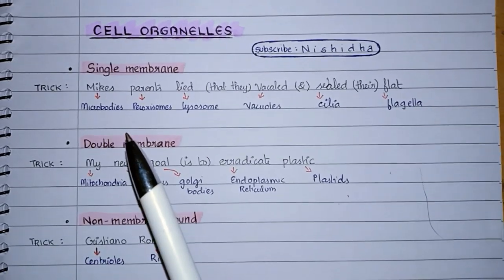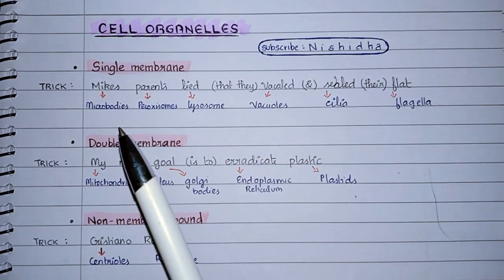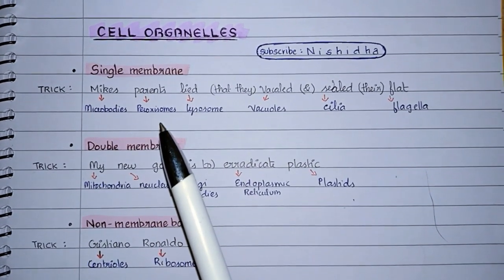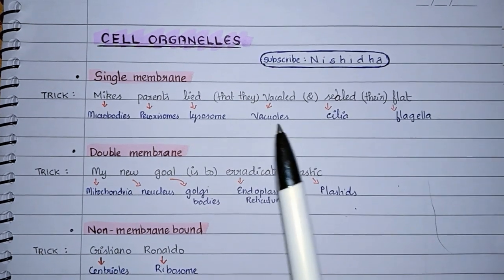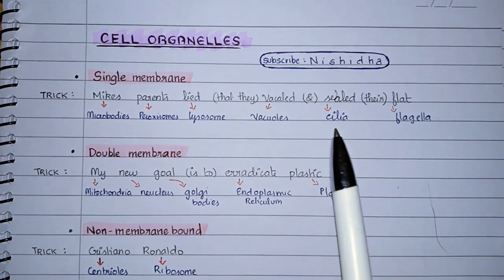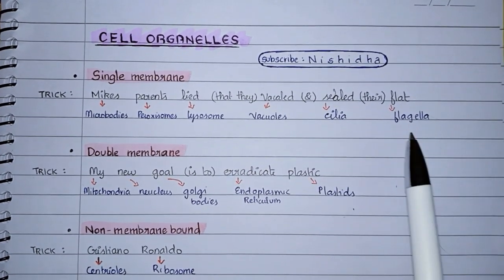Single membrane-bound organelles are microbodies, peroxisomes, lysosomes, vacuoles, cilia and flagella.